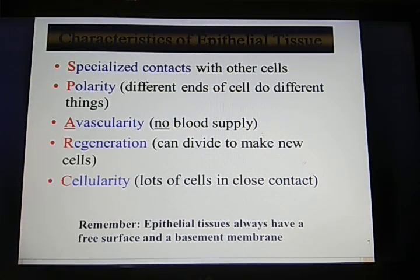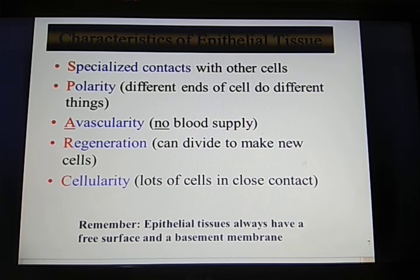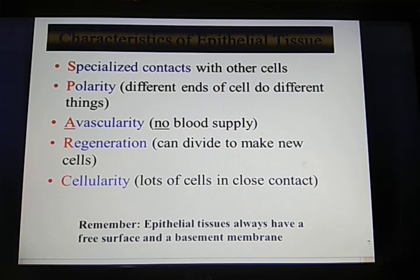The basic characteristic features of epithelial tissue: these cells are present throughout our skin and can contact every part of the body. They are polar in nature because cells can connect to different types of cells. There is no blood supply, so they are avascular. They can regenerate — they can divide to make new cells. There is high cellularity with cells in close contact. Epithelial tissue is the free surface tissue found in the basement membrane, and its functions are protection, absorption, and secretion.